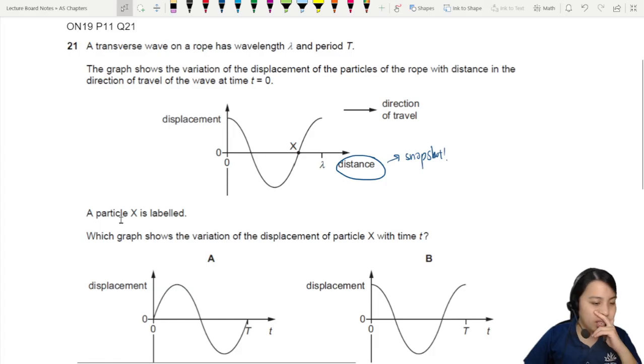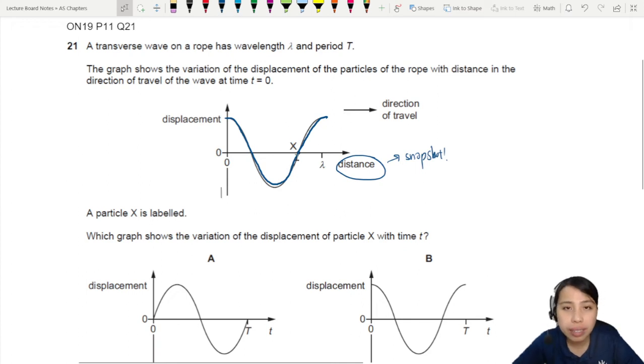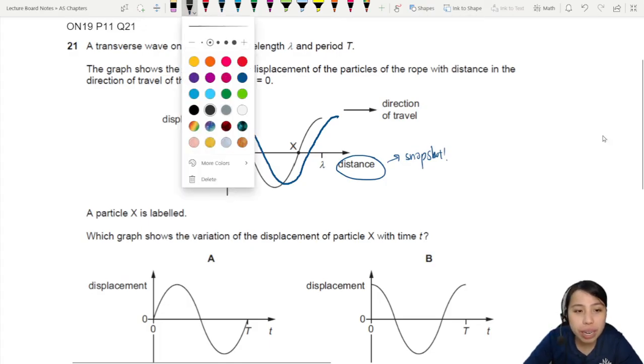What we need to find is on this wave there's a particle X right here. Which graph shows the variation of displacement of particle X with time t? Oh man. Let's do some animation here. I'm gonna trace out the wave originally. It's like that. Now let's say I move the wave to the right a little bit, just a little bit. So it goes like that.